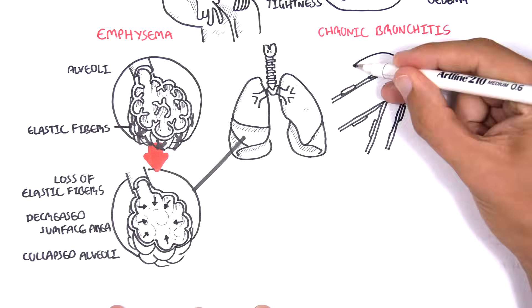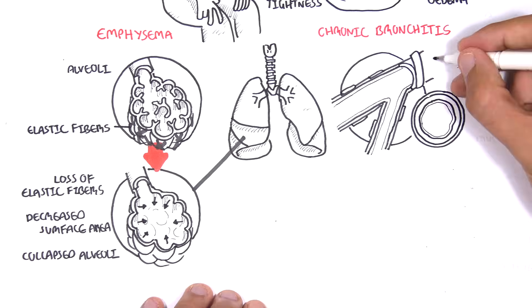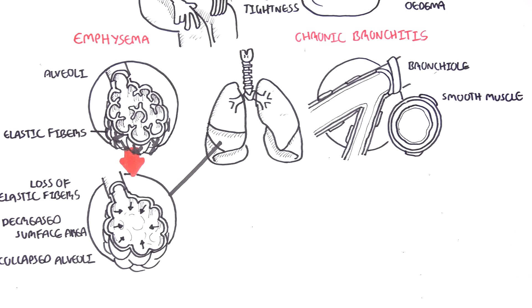In pure chronic bronchitis, we have problems along the airway tract, specifically the bronchioles. Here I am drawing a normal bronchial with smooth muscle and mucus.